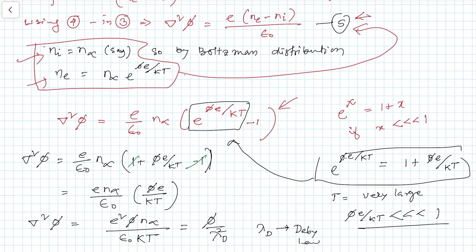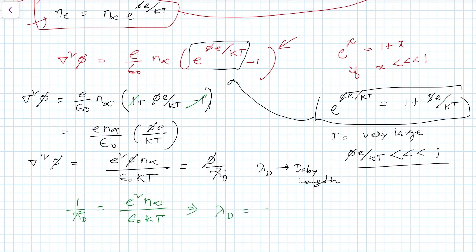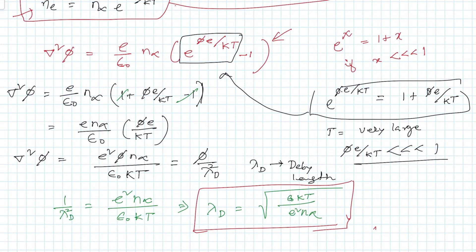Hence, lambda-d equals the square root of (epsilon-naught kT divided by e-squared n-infinity). This is the expression for the Debye length. Hope this is clear to you. Thank you for watching this video.